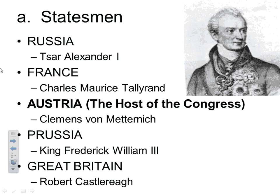To work through the SI topics, we have the statesmen in Part A, and you can see the nations represented. The most important figure pictured here is Clemens von Metternich, the diplomat for Austria. Since Austria is where Vienna is located, they are hosting the Congress, and he is really a driving force behind much of the political ideas as well — so he's an important player.